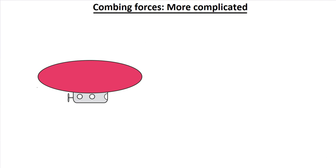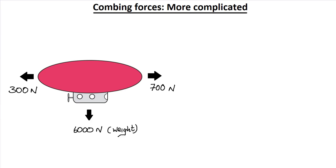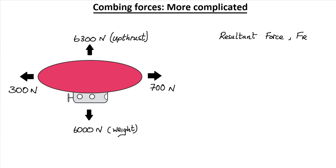Consider this airship, where we have a thrust of 700 newtons acting to the right — that's in the positive direction — and an air resistance of 300 newtons acting to the left, while the weight of the airship acts as 6,000 newtons downwards and an upthrust of 6,300 newtons acting in the upward direction. First of all, let's consider the resultant force in the horizontal direction.